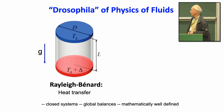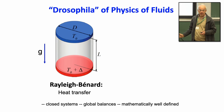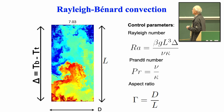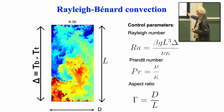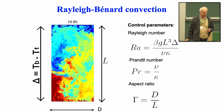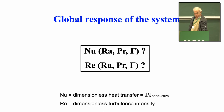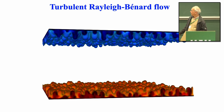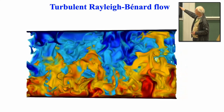The drosophila of physics of fluids is Rayleigh-Bénard — a container of water heated from below and cooled from above where heat is transferred. It's a closed system with global balances and mathematically well-defined. The Rayleigh number is the dimensionless temperature difference driving the system; the Prandtl number is the ratio between kinematic viscosity and thermal diffusivity; and the aspect ratio is width over height. The global response is the Nusselt number and the Reynolds number — dimensionless heat transfer and turbulence intensity.